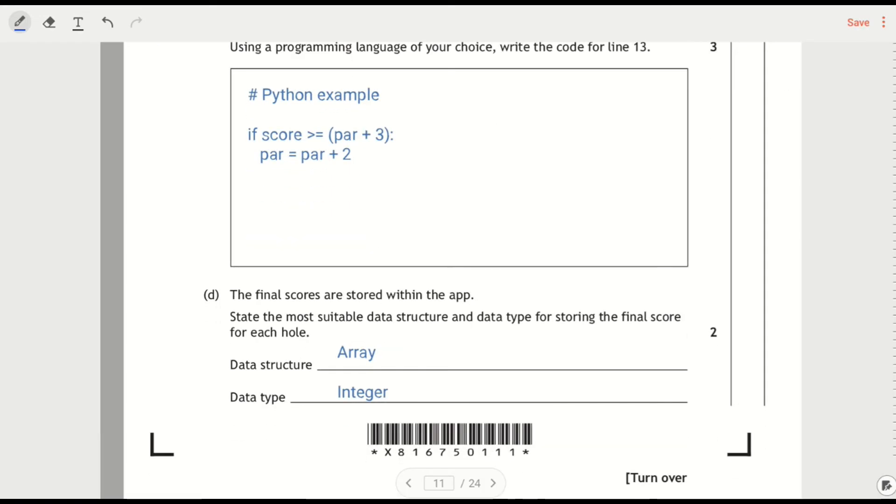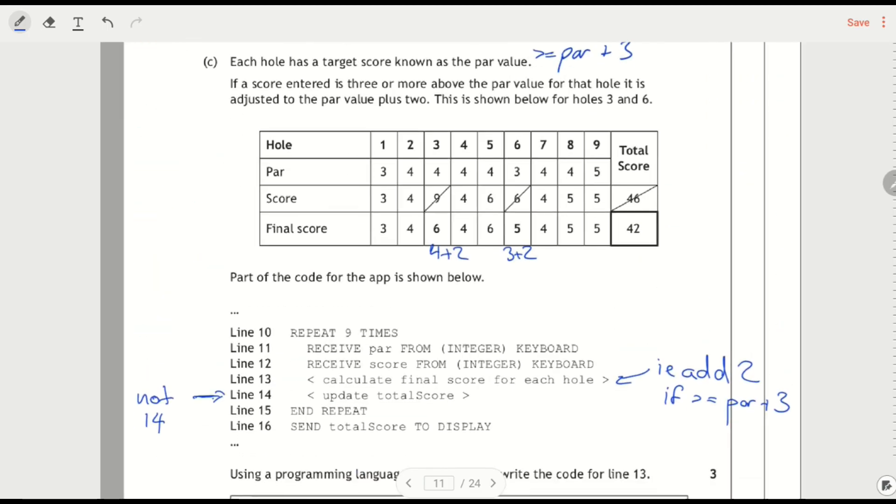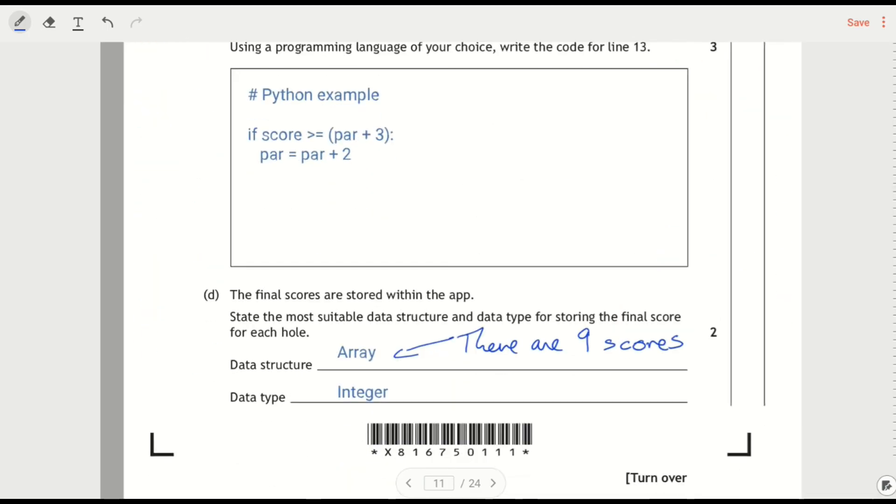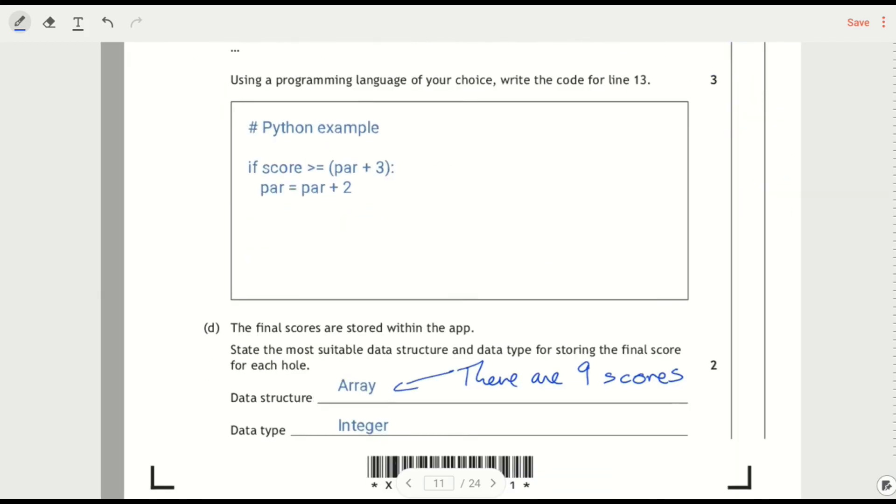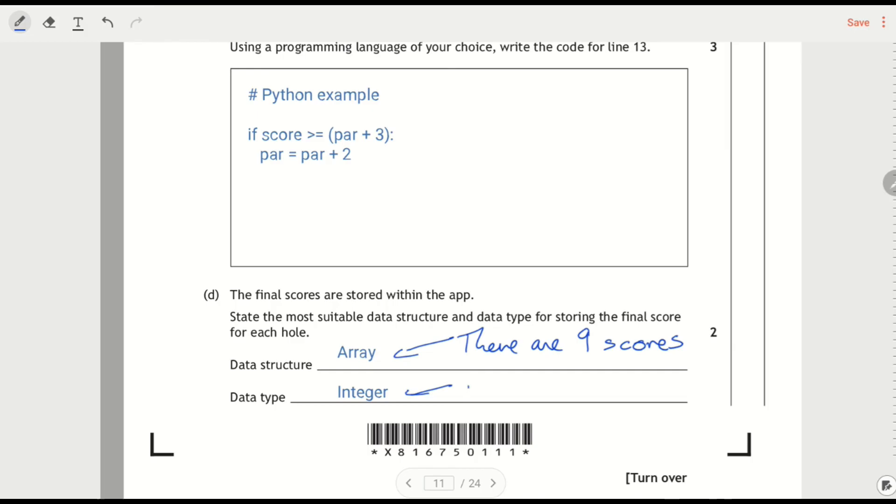The final scores are stored within an app. Choose the most suitable data structure. There are nine scores storing the final scores for each hole. Therefore, it's an array. And it's an integer because there's no decimal point. I shouldn't really say 'no point there.' I should say no decimal point.